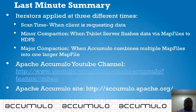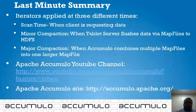Here's a last-minute summary. Iterators can be applied at three different times: at scan time, which is when the client is requesting data; at minor compaction, when the tablet server flushes data via map files to HDFS; or at major compaction, when Accumulo combines multiple map files into one larger map file.